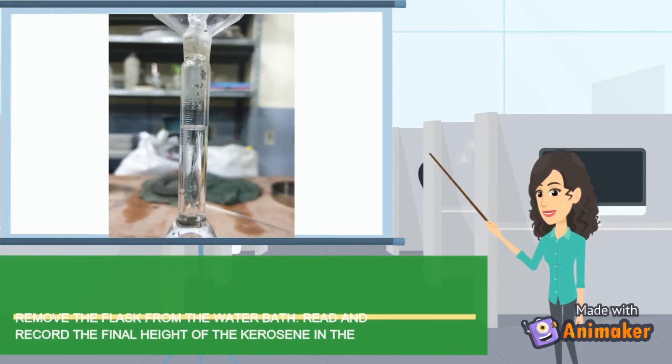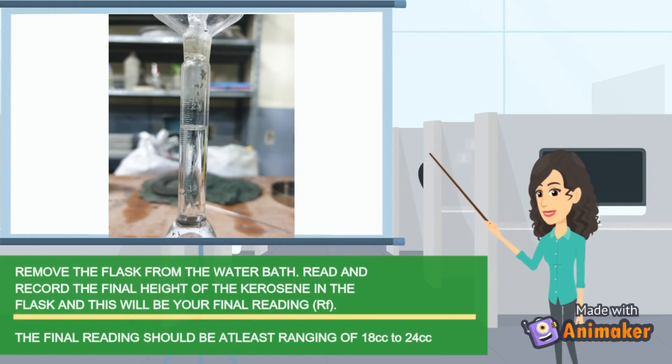Remove the flask from the water bath. Read and record the final height of the kerosene in the flask and this will be your final reading. The final reading should be at least ranging of 18 cubic centimeter to 24 cubic centimeter.